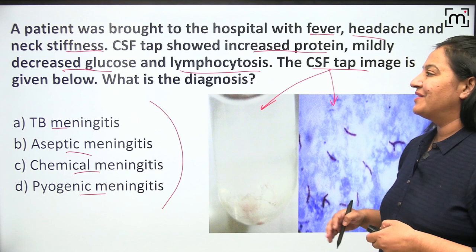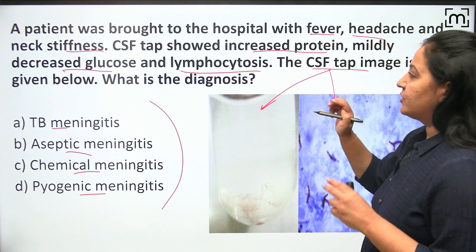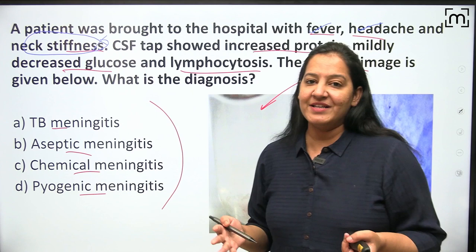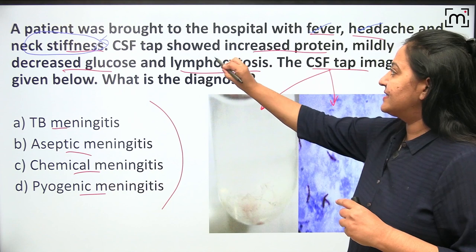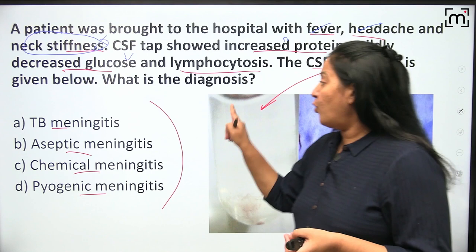You have to pick up the clues from the question. The three symptoms — fever, headache, and neck stiffness — are the clues. Neck stiffness points toward meningitis. From the CSF tap: protein is increased, glucose is decreased, and the cells are lymphocytes, not neutrophils. Three clues are given in the CSF tap, along with two images.